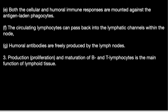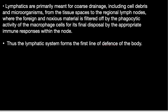Production and further maturation of B and T lymphocytes is the main function of the lymphoid tissue. Lymphatics are primarily meant for coarse drainage, including cell debris and microorganisms, from the tissue spaces to the regional lymph nodes, where foreign and noxious material is filtered off by the phagocytic activity of macrophage cells for final disposal by appropriate immune responses. Thus the lymphatic system forms the first line of defense of the body.